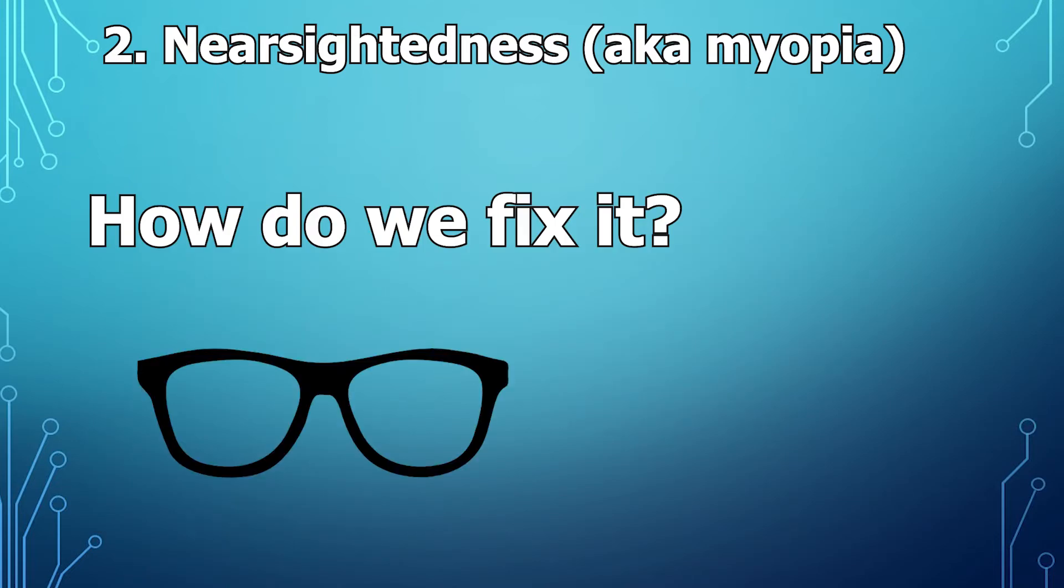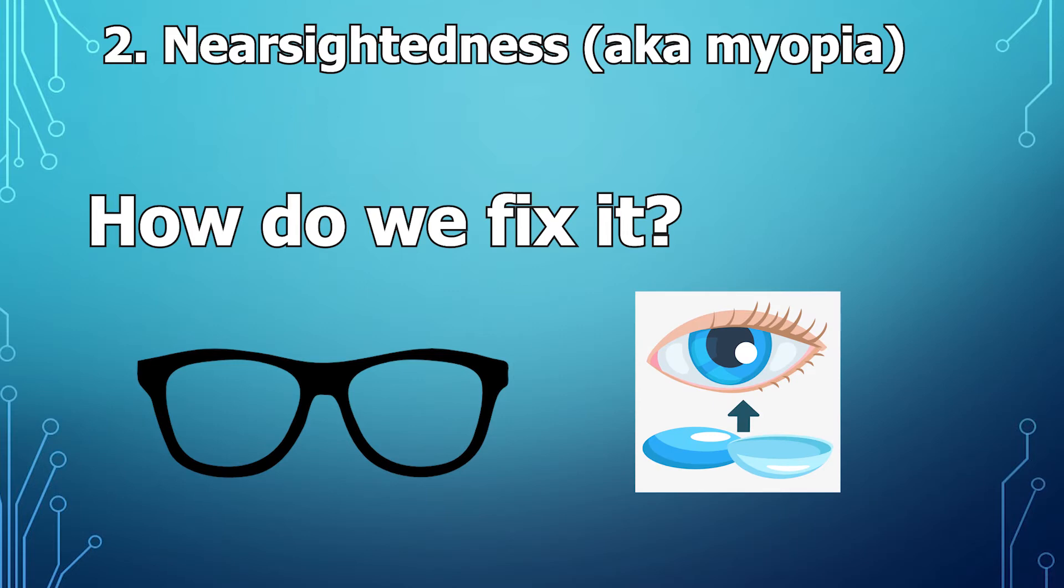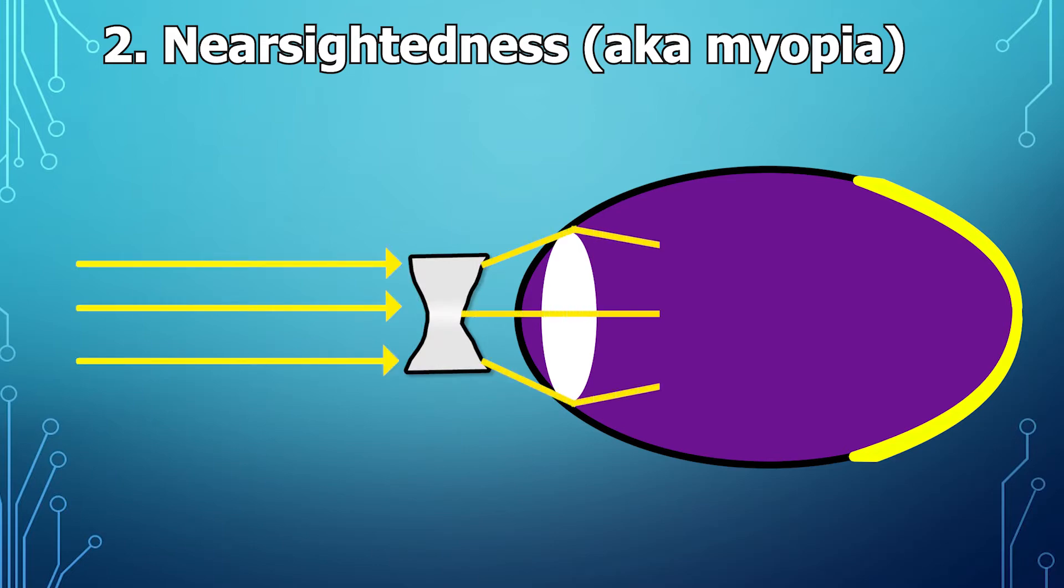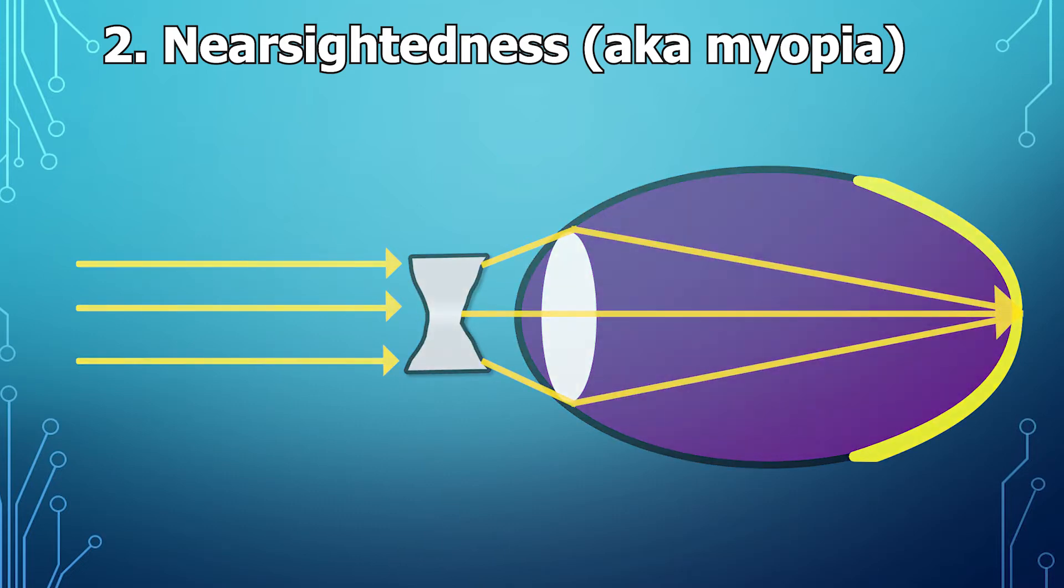So that's no fun. How do we fix it? Well, glasses of course, or contacts—I don't judge. But what kind of glasses? For nearsightedness, you want to use diverging lenses. So when light comes through them, it spreads the light rays out so when those light rays hit the lens of your eye, your lens is able to focus right on the retina and you get a clear, happy image.